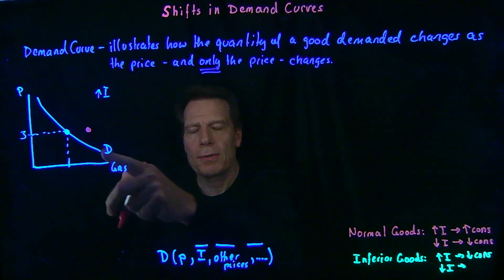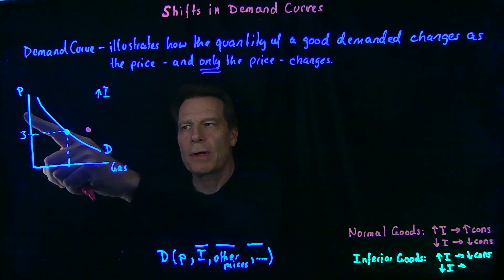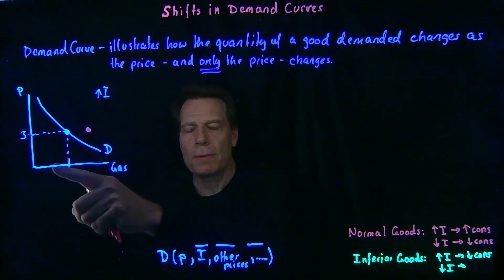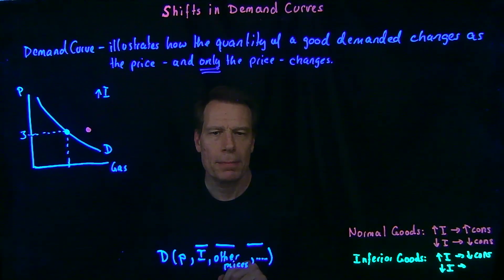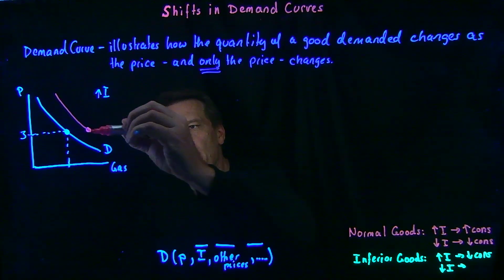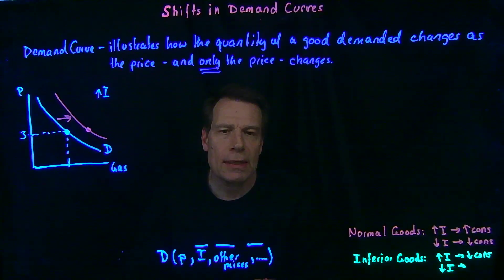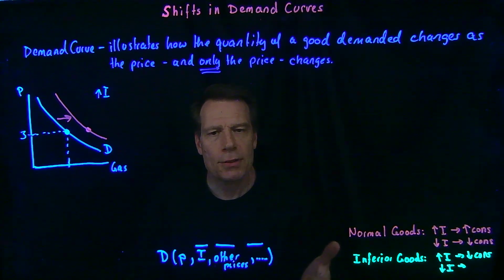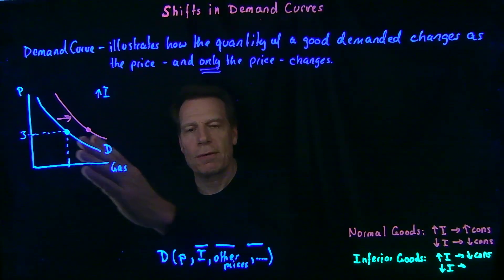Similarly, every other point on the demand curve will shift to the right. If you previously at the price of $4 were going to consume a certain amount of gasoline, now you're going to consume more when your income goes up, if gasoline is a normal good. So the whole demand curve shifts to the right with an increase in income if gasoline is a normal good — and similarly, if income falls, it'll shift to the left.